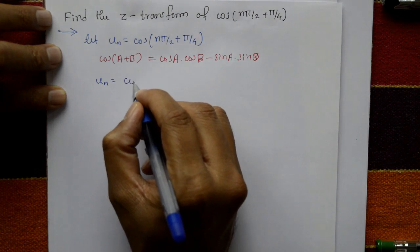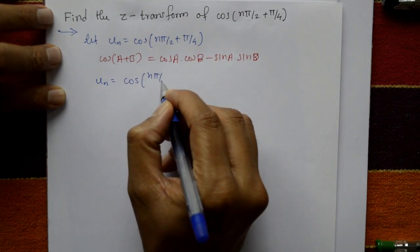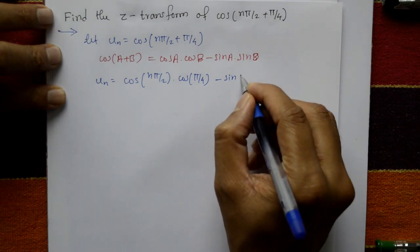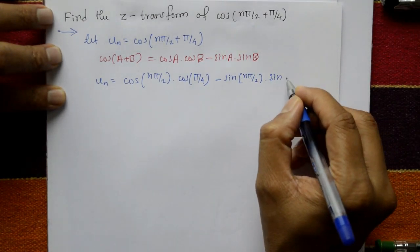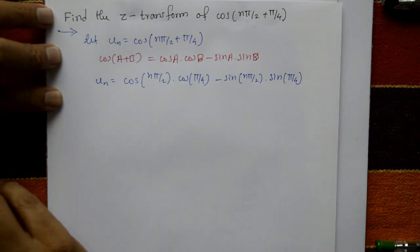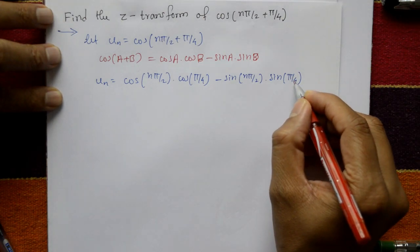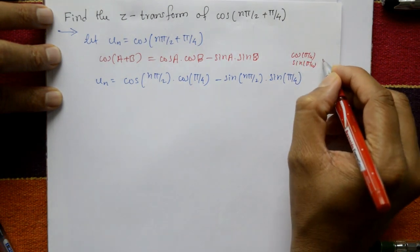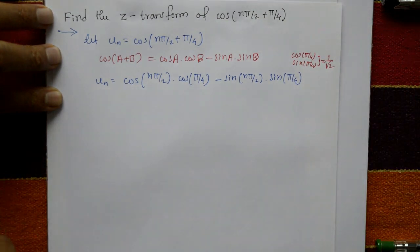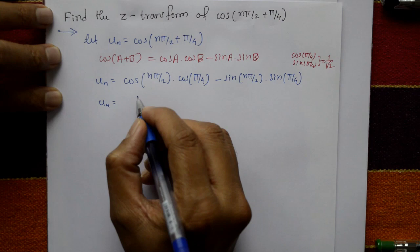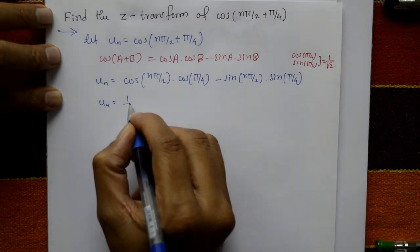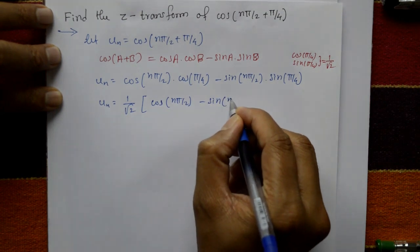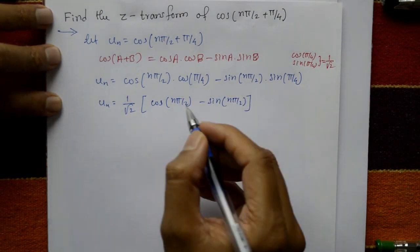So u(n) = cos(nπ/2) · cos(π/4) − sin(nπ/2) · sin(π/4). Since π/4 is 45 degrees, both cos(π/4) and sin(π/4) equal 1/√2. Taking 1/√2 as common, u(n) = (1/√2) · [cos(nπ/2) − sin(nπ/2)].